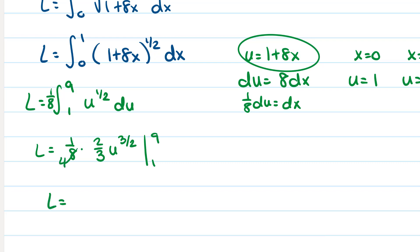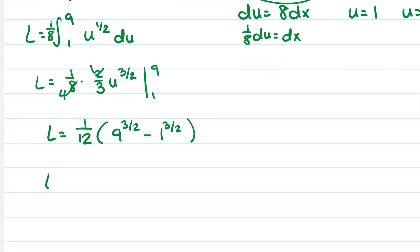So that becomes a 4, that's a 1. So 1 over 12, 9 to the 3 halves minus 1 to the 3 halves. So we get 1 twelfth, this is going to be the square root of 9 is 3 cubed is 27 minus 1. So we get 26 over 12, which is 13 over 6.